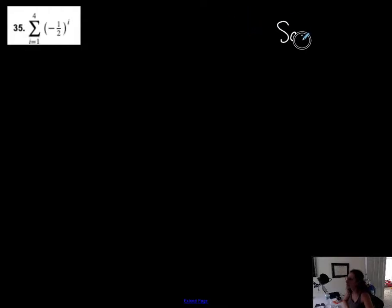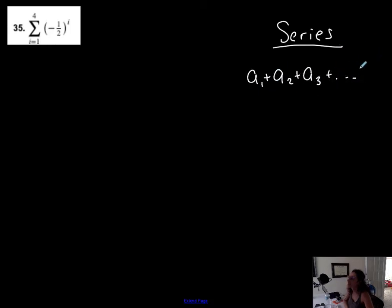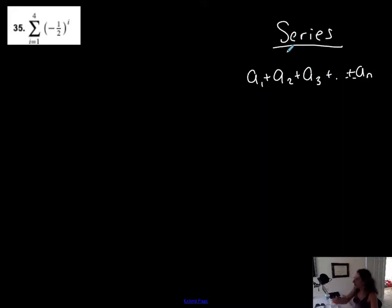This notation tells you to take a sum. When you're taking a sequence and adding up the terms of the sequence, you have what's called a series. A series is the sum of the first term, the second term, the third term, all the way to the nth term — and sometimes past that depending on the sequence. So a series is the sum of terms from a sequence.